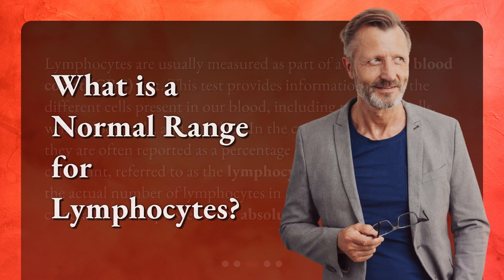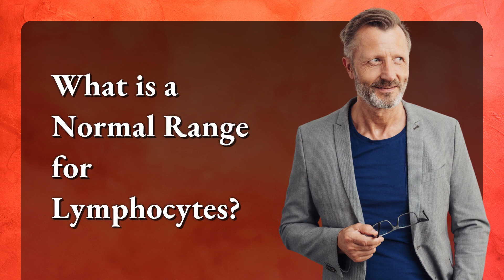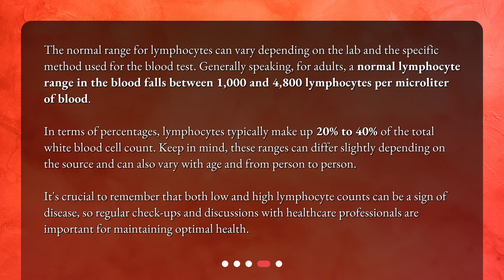The normal range for lymphocytes can vary depending on the lab and the specific method used for the blood test. Generally speaking, for adults, a normal lymphocyte range falls between 1000 and 4800 lymphocytes per microliter of blood. In terms of percentages, lymphocytes typically make up 20 to 40 percent of the total white blood cell count.